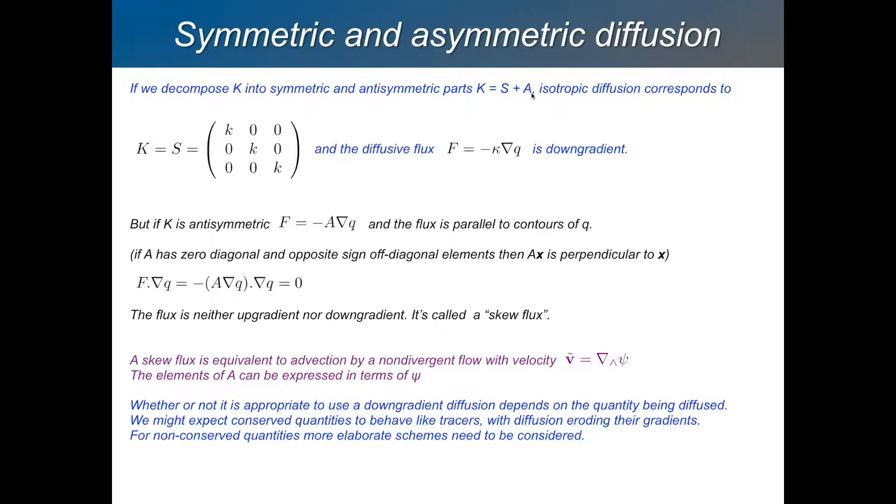And if that's the case, then if you have, for example, A has a zero diagonal, and the off-diagonal elements are of opposite sign, so it's anti-symmetric, then strictly A, that matrix A times a vector is perpendicular to that vector. So you can also have a diffusive flux, which is not up or down the gradient. It can be along the gradient. So parallel to the contours of the mean state. That's also possible. And that flux is neither up gradient nor down gradient. It's called a skew flux.